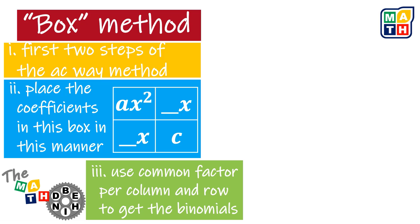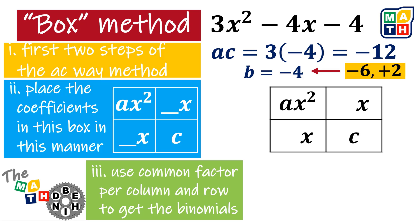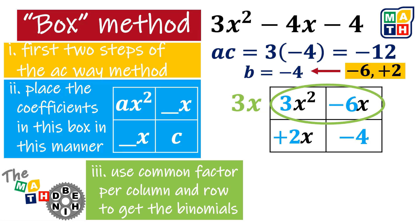Now, what if our quadratic expression is given like this? Using the same box method, Step I: A times C is negative 12, and the factors should be negative 6 and positive 2, which would result in B when added. Then we set up the table, changing the value of a to the given, which is 3, and c, which is negative 4. Placing the two coefficients, we have the completed table.